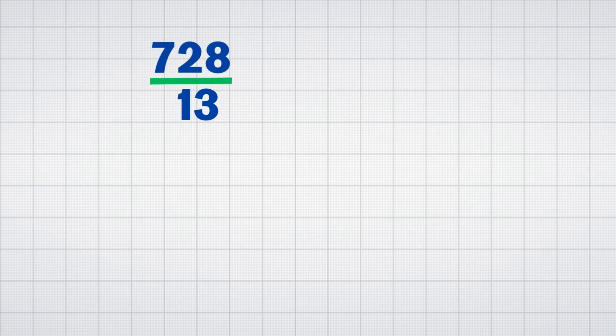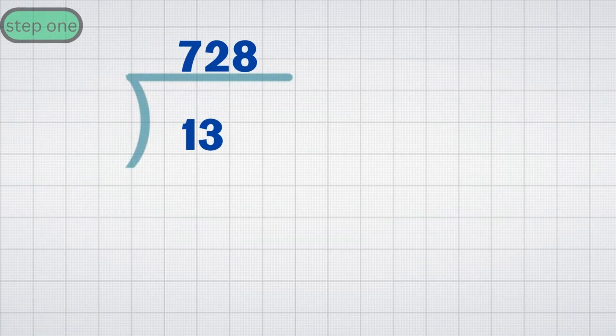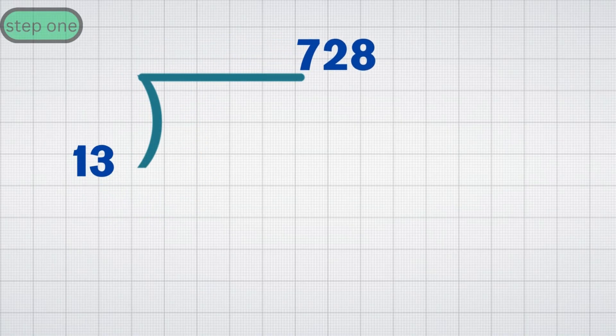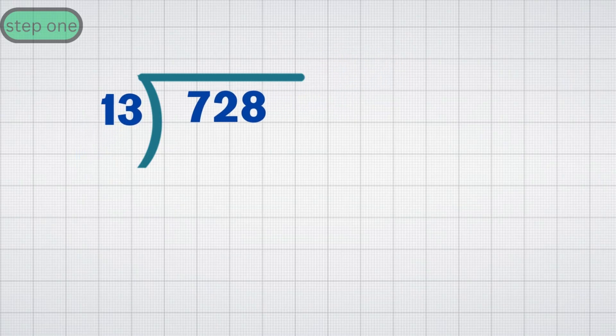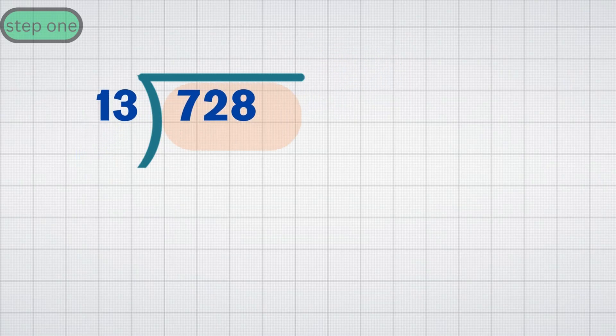Example 1. Step 1: Set up the long division. Write 728, the dividend, under the long division symbol. Place 13, the divisor, outside the division bar.